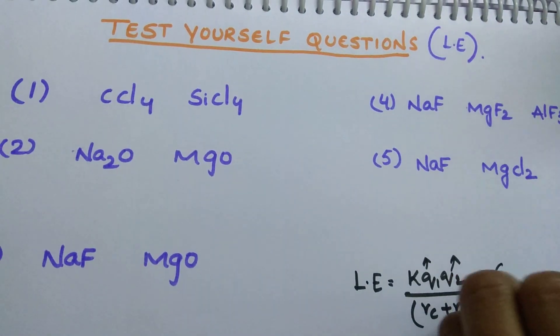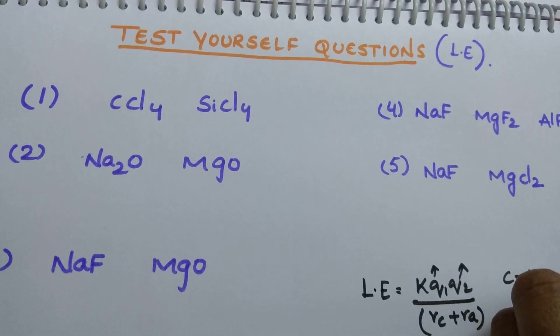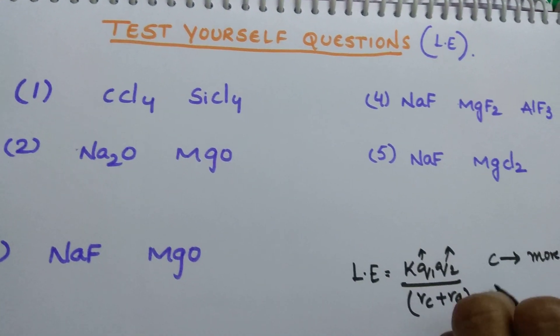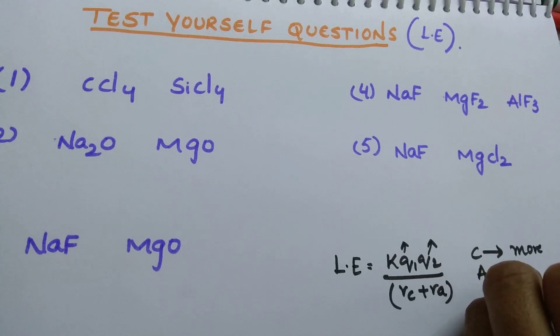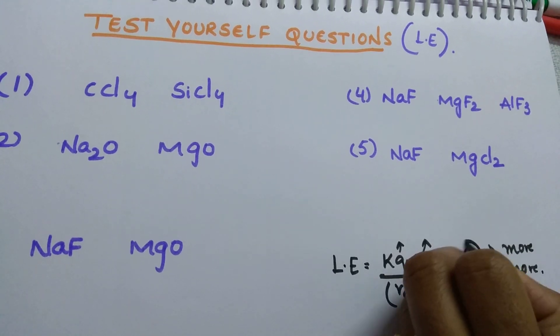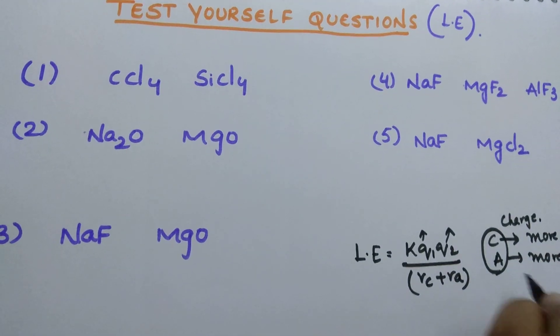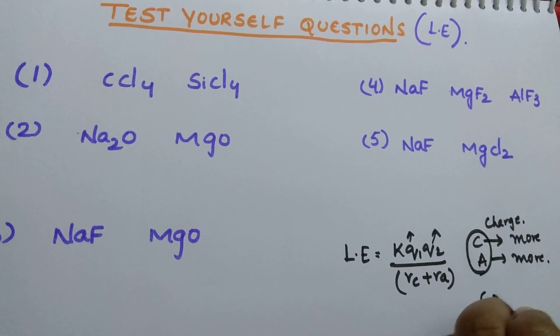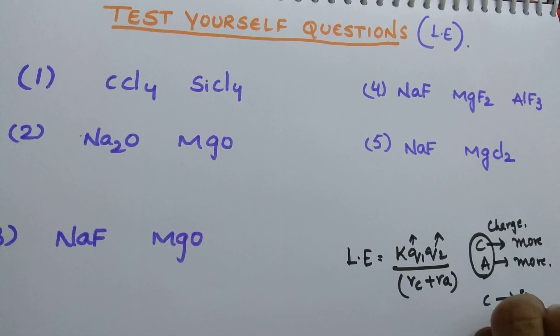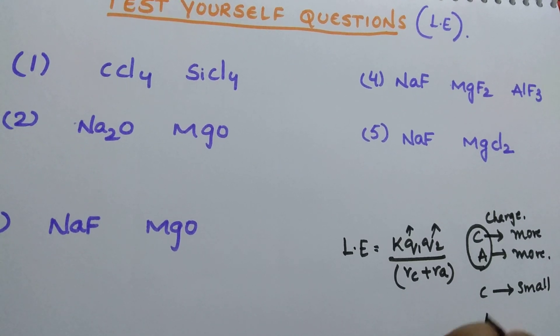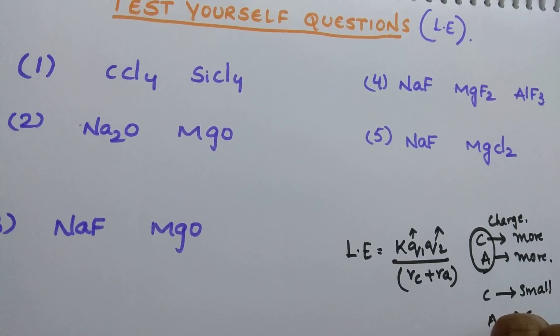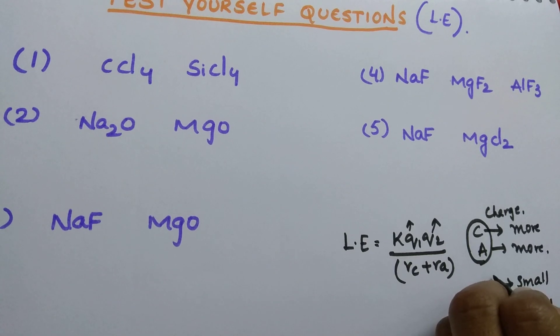Charge on cation should be more, anion charge should be more. This is cation and anion charge. And radius of cation should be small, radius of anion should be small. This is based on size.